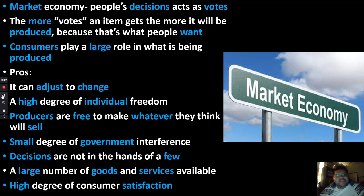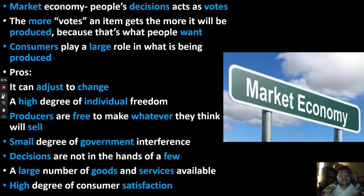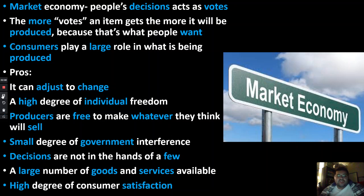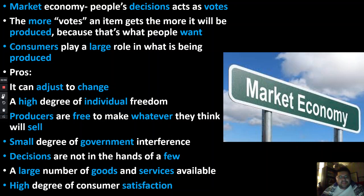So, market economy — basically, people's decisions act as votes when it comes to the market. When you decide to buy a soda and choose Pepsi over Coca-Cola, you're casting your vote saying 'I want this over this.' The more votes something gets, the more that company will produce it. If you pick cherry Pepsi, you're telling the company 'I like this, make more of it.' The more people buy it, the more the company knows people really like it and needs to make more.